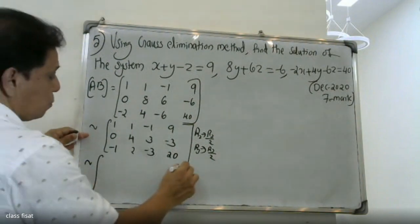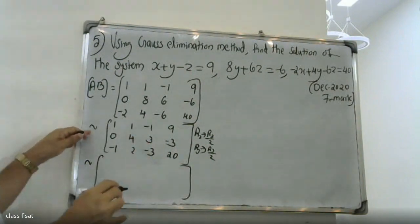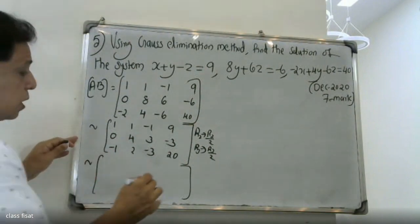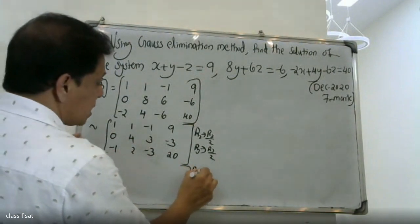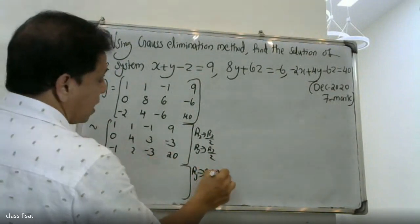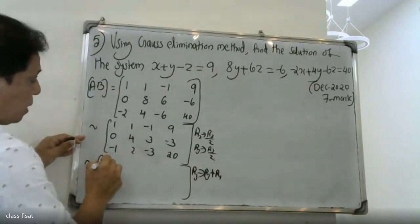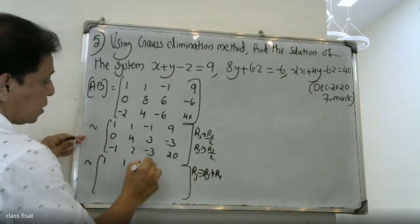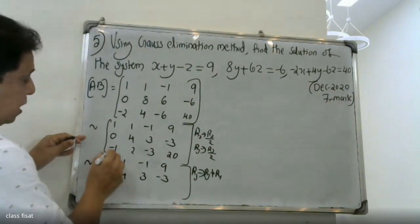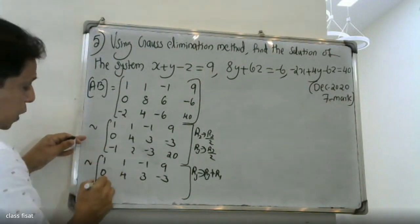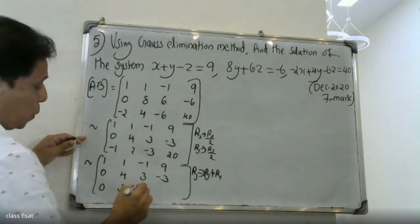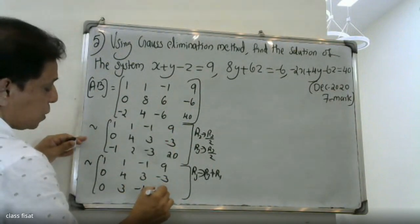We can change the first row since the element is zero. R3 changes into R3 plus R1, R3 plus R2. First row: 0, 1, 1, minus 1, 9. Second row: 0, 4, 3, minus 3. Then: minus 3, minus 3, minus 3, minus 4, minus 4, minus 29, minus 24.